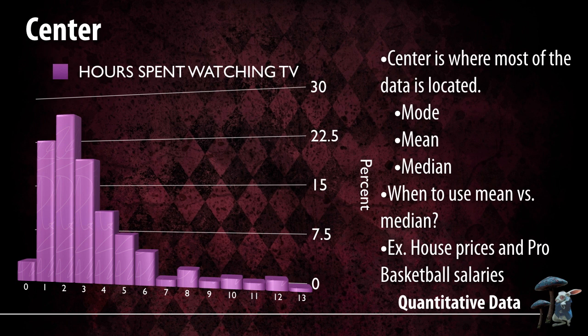If it's symmetric or uniform, we're going to choose the mean. If I can choose the mean, I want to choose the mean — it's probably the most useful description of center. Quick summary: the mode is chosen when you have multiple modes; the mean is chosen when you have symmetric or uniform distributions; and the median is chosen when you have skewed left or skewed right graphs.